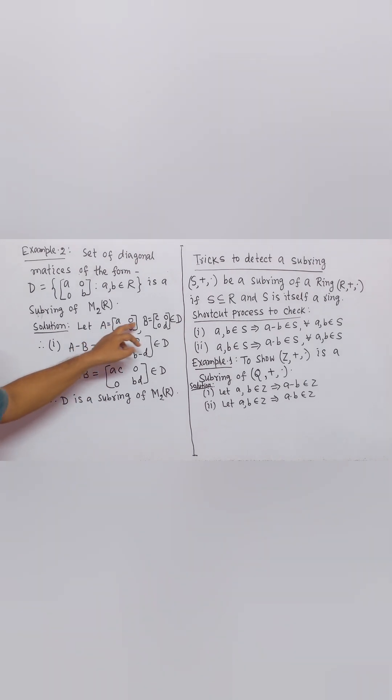Let A and B be two diagonal matrices. A minus B is a diagonal matrix and A multiply B is also a diagonal matrix. Therefore D is a subring of M to R.